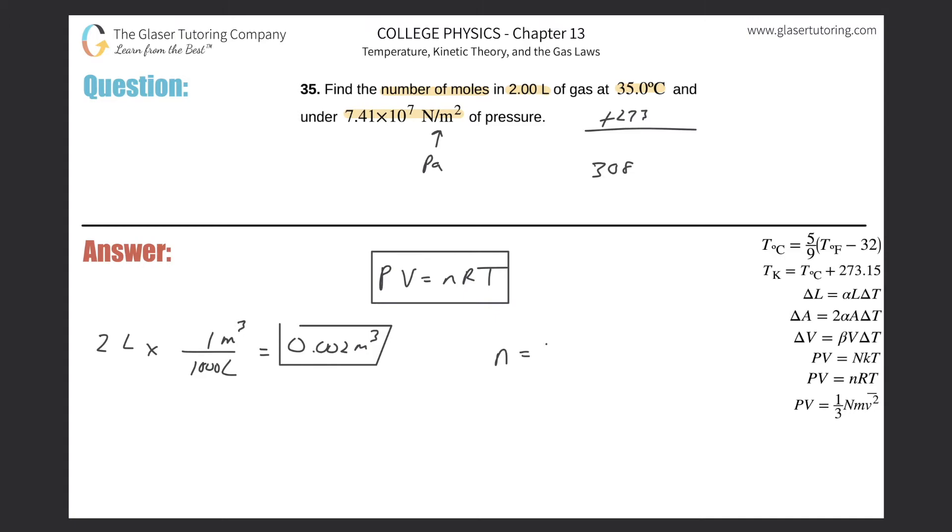Let's solve this formula for n - just divide RT to the other side. So we have PV/RT = n. All we need to do is plug in the values: 7.41×10^7 multiplied by the volume of 0.002, divided by the R value of 8.31 and the temperature of 308.